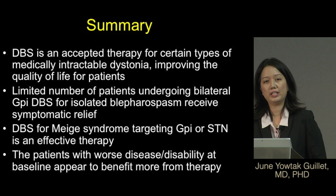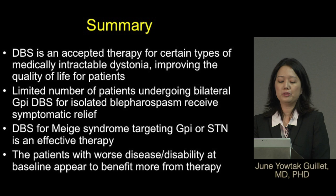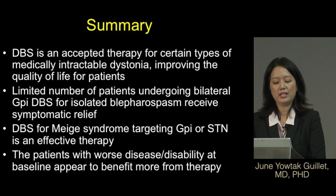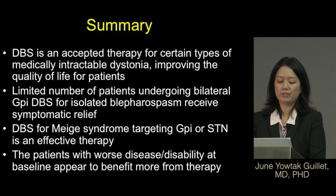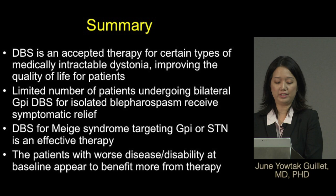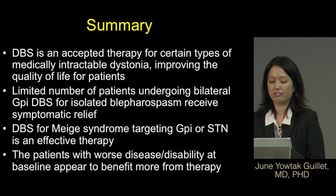In summary, DBS is an accepted therapy for certain types of medically intractable dystonia, improving quality of life for some patients. The limited number of patients undergoing bilateral GPI DBS for isolated blepharospasm do receive symptomatic relief. DBS for Meige syndrome targeting either GPI or STN is an effective therapy, and patients with worse disease or disability at baseline appear to benefit more.